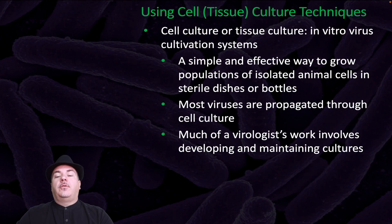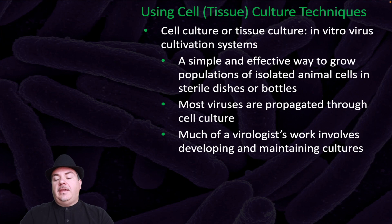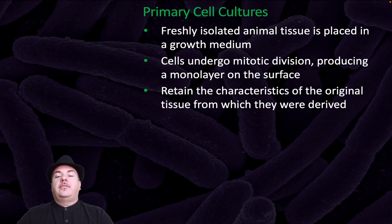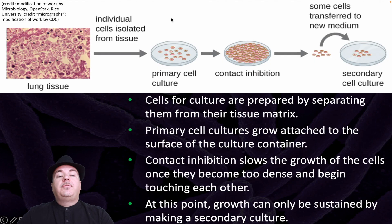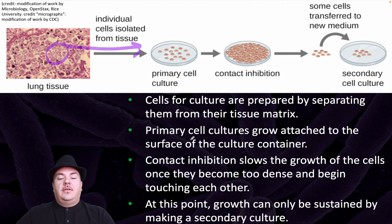In vitro, we can use cell or tissue culture techniques. Cell culture or tissue culture is an in vitro virus cultivation system — a simple and effective way to grow populations of isolated animal cells in sterile dishes or bottles. Most viruses are propagated through cell culture, and much of a virologist's work involves developing and maintaining cultures. Primary cell cultures are freshly isolated animal tissue placed in a growth medium. Cells undergo mitotic division, producing a monolayer on the surface, and they retain the characteristics of the original tissue from which they were derived. With primary tissue culture, cells are prepared by separating them from their tissue matrix.